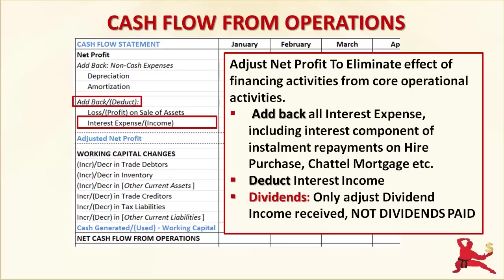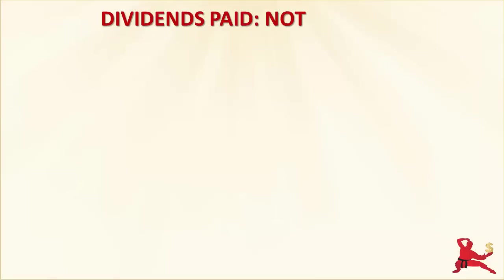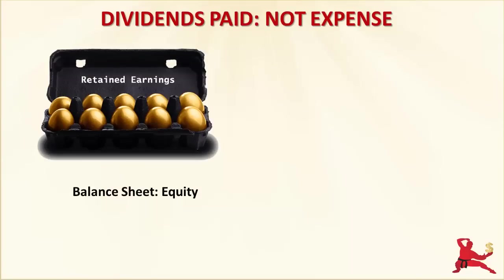However, dividends paid by your business to its shareholders are not part of the adjustments in the Cash Flow from Operations section. This is because dividend payments are not an expense — they are a distribution of profits to shareholders or owners. Profits go into the retained earnings account on the Balance Sheet and build up the amount of equity or shareholders' funds of the business. Dividend payments reduce the amount of equity in the business.